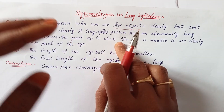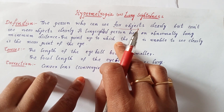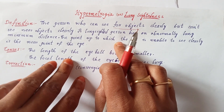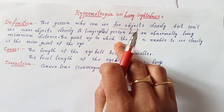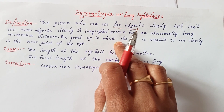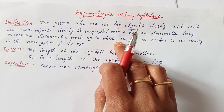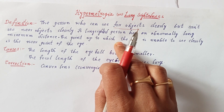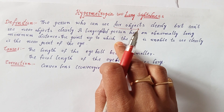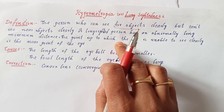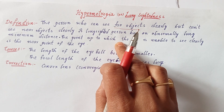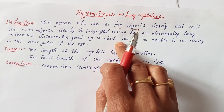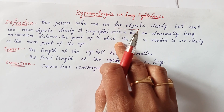When objects are placed at infinity, the person can see clearly without any spectacles. But objects placed near the eye — at 25 cm, 50 cm, 100 cm — the person will not be able to see. So if he has to see near objects, he needs spectacles. You can observe this in old-age people: for reading a newspaper they use spectacles, or they stretch their hands to read without spectacles.